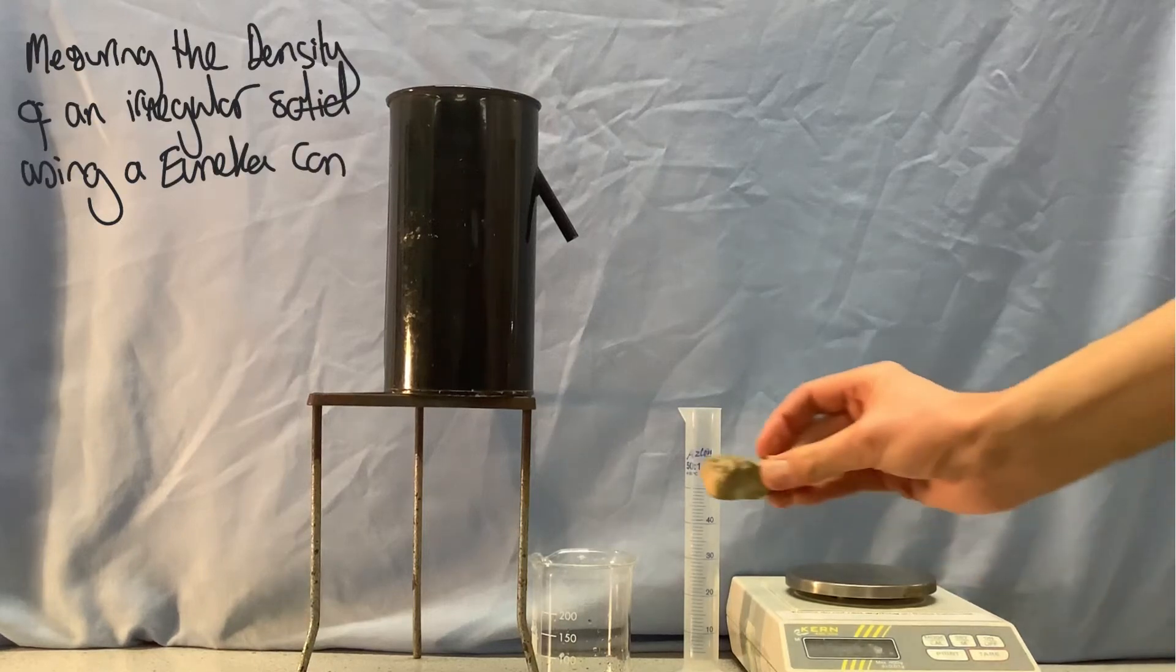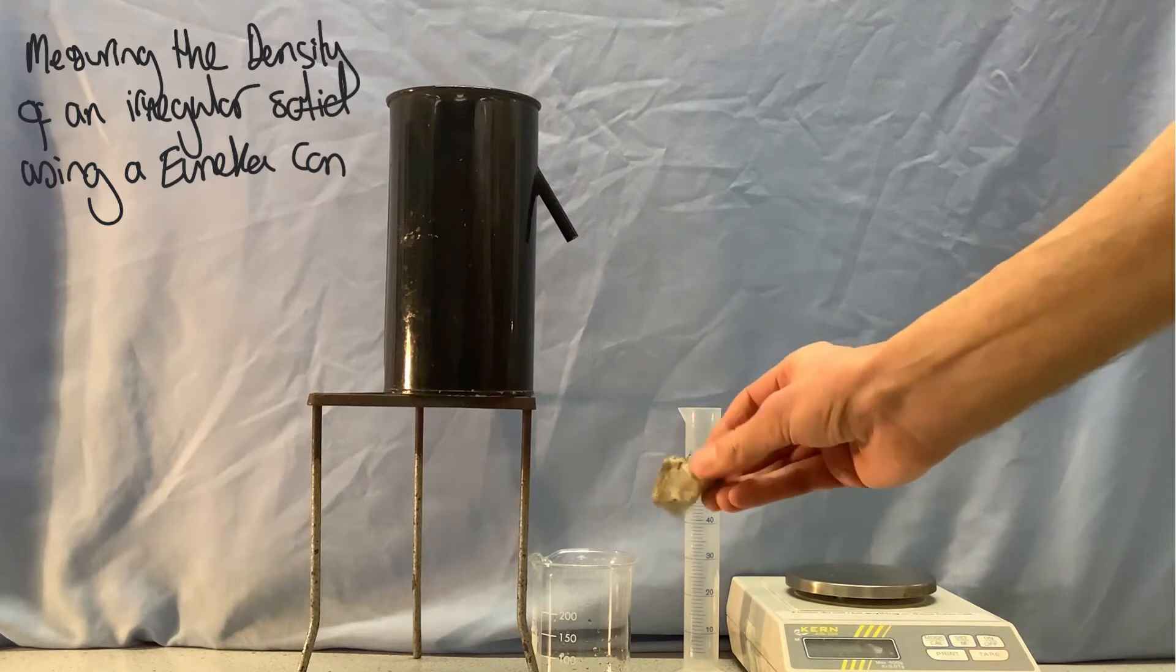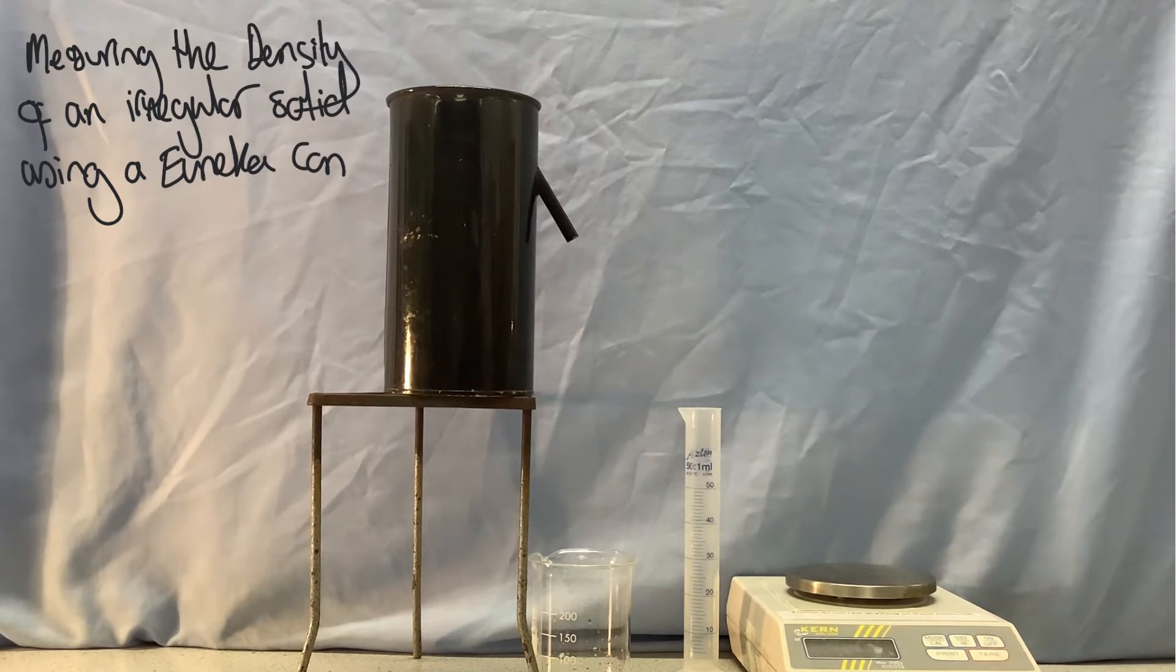Let's look at finding the density of this irregular shaped solid using a Eureka can. The first thing that we need to do, as usual with finding density, is find the mass of the solid.